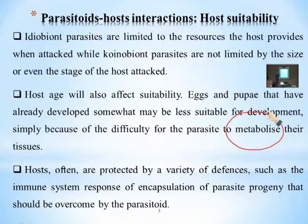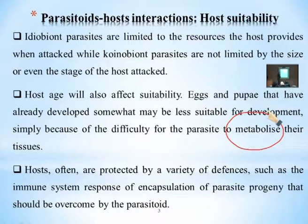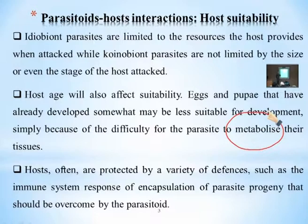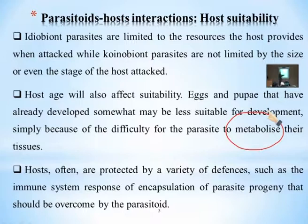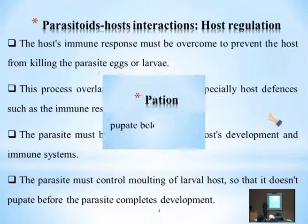The nutrients inside the host will have already been converted to other forms. Hosts are often protected by a variety of defenses such as immune system response and encapsulation of the parasite progeny, which must be overcome by the parasitoid. Insects have internal immune mechanisms against parasitoid infection, and the parasitoid must be able to bypass these defense mechanisms. At advanced developmental stages, it becomes harder for the parasitoid to overcome the host's immune response.